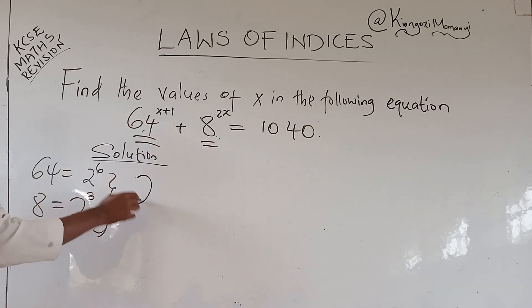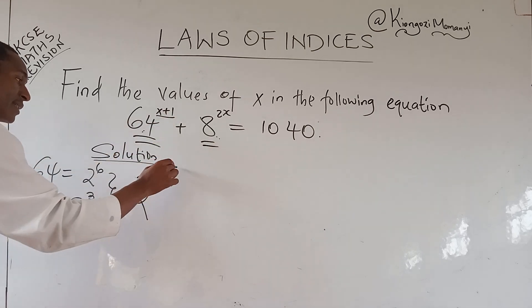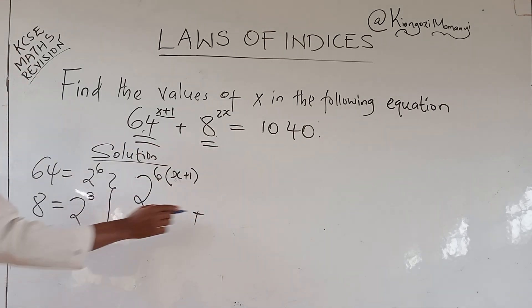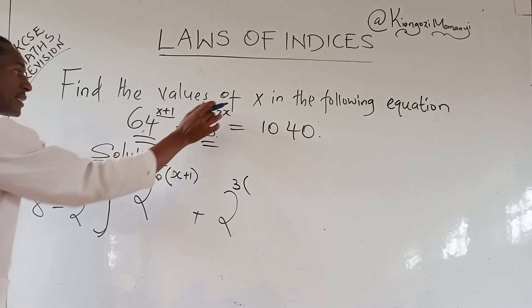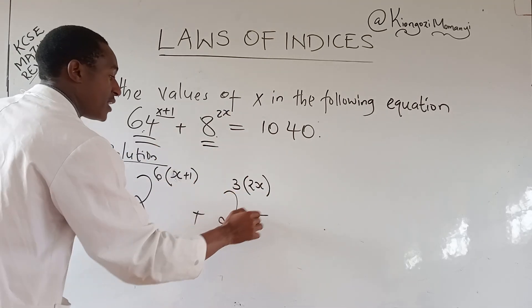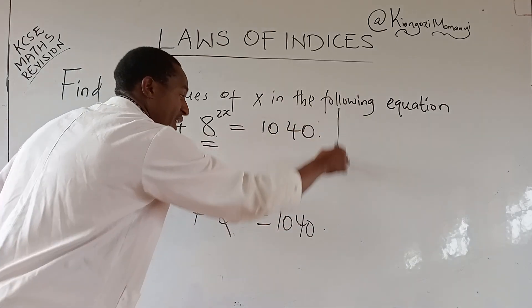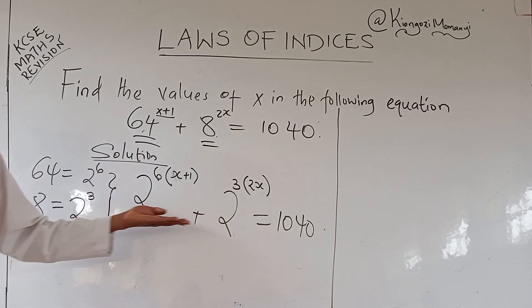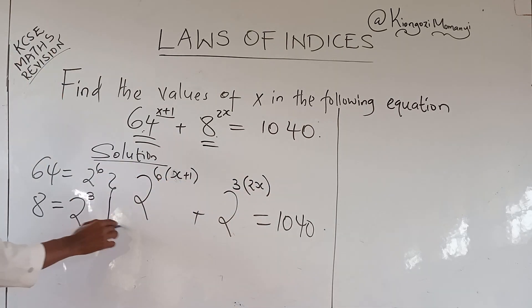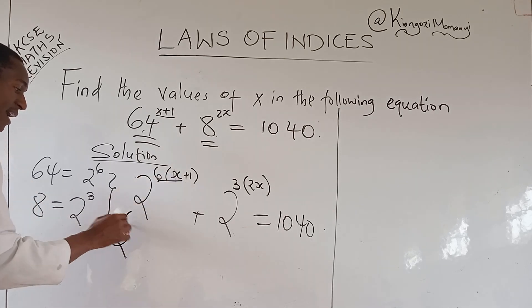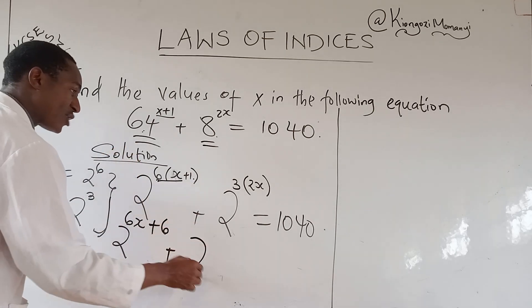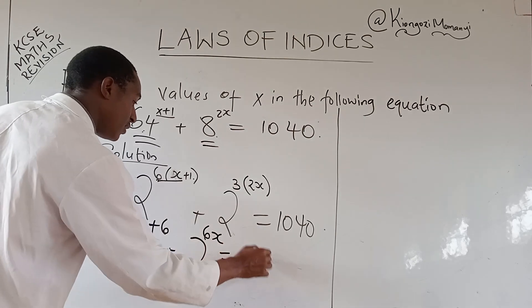In the place of 64, we shall say 2 power 6, then of course brackets x plus 1. And in the place of 8, we shall say 2 raised to power 3, brackets, we have 2x, then is equals to 1040. We have no business prime factorizing 1040 because it may not give us these bases. So this multiplication here by opening these brackets shall have 2 raised to power 6x plus 6 times 1 is another 6, then plus 2 raised to power 6x is equals to 1040.